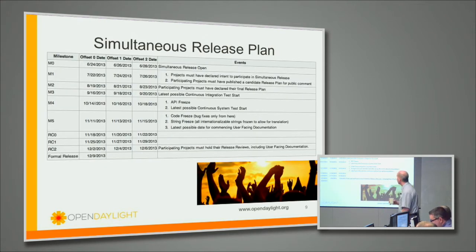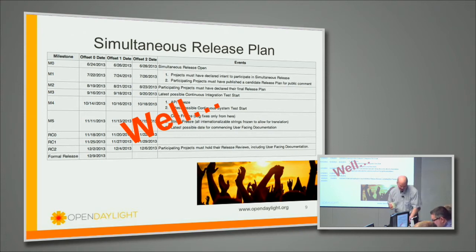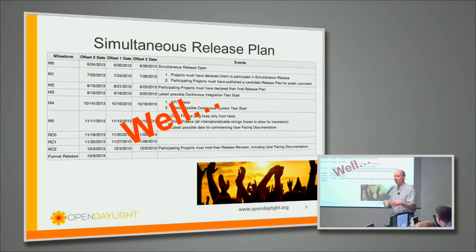We had a simultaneous release plan. It didn't happen exactly the way we thought — we kind of got within two months of the target. That had to do with the fact that building the OpenFlow 1.3 plugin was harder than we thought it was going to be.